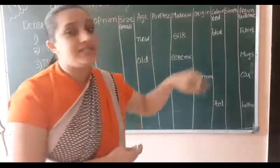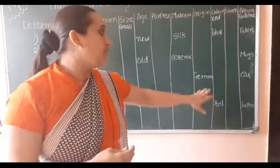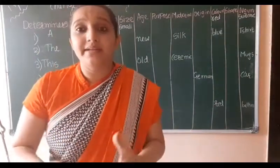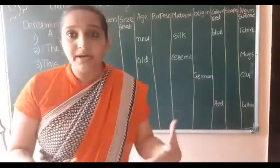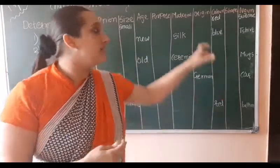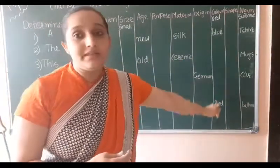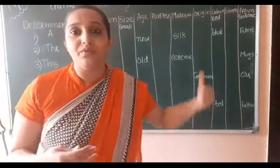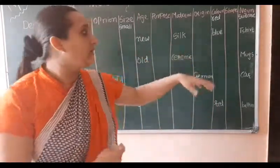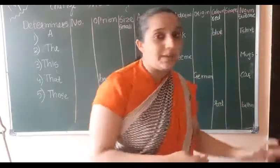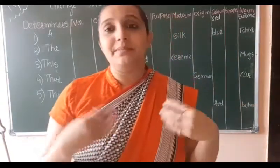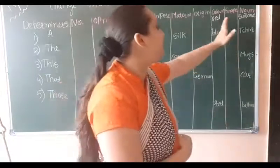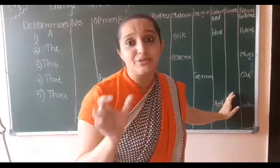Next will be origin. Origin means Italian, American, or German — this comes under origin. Next will be color — red, blue, whatever. Next will be shape. Shape can be circle, triangle, or whatever.